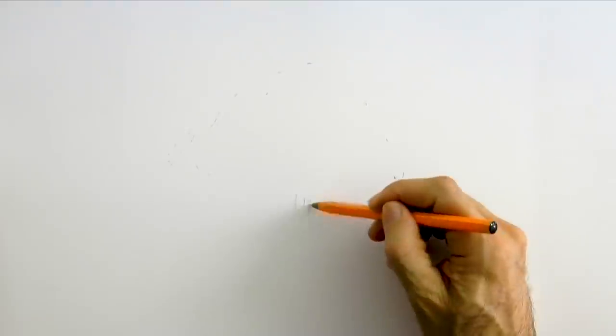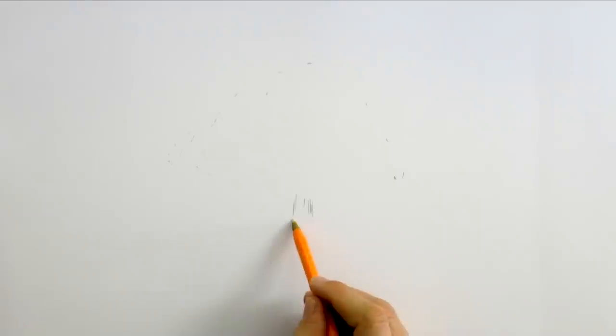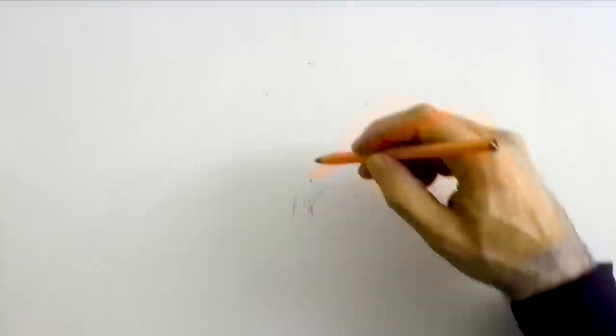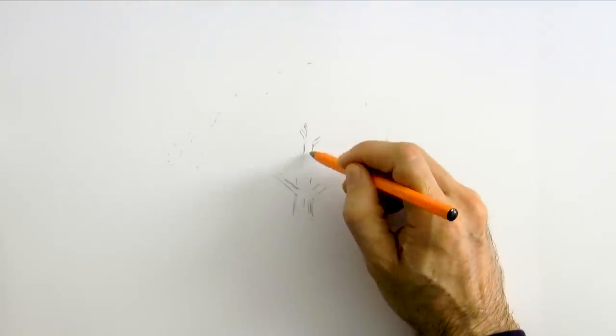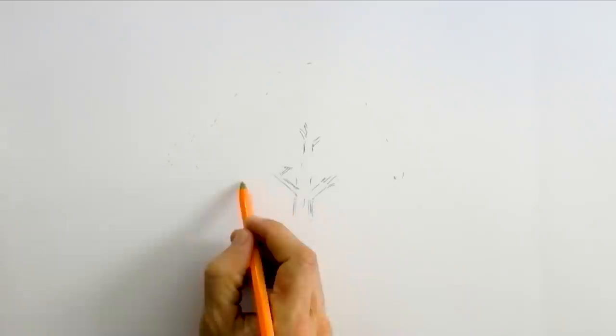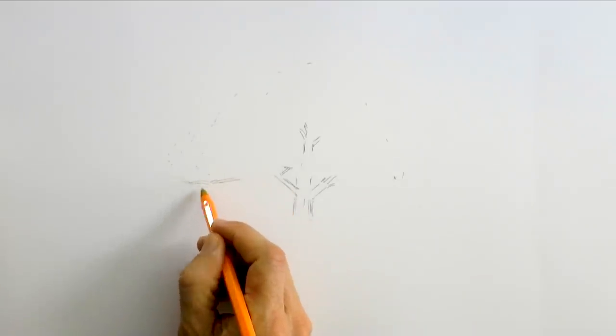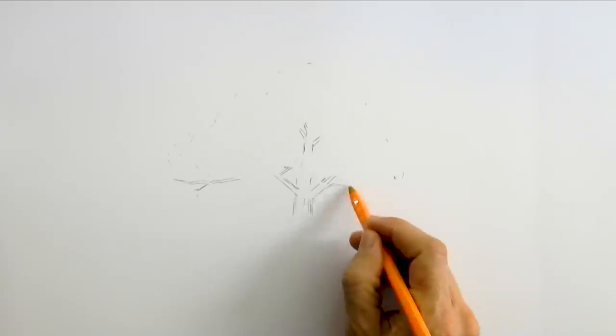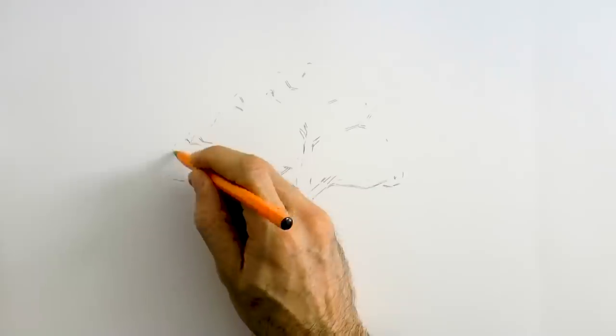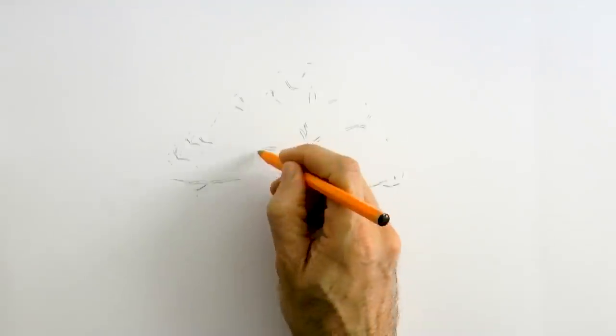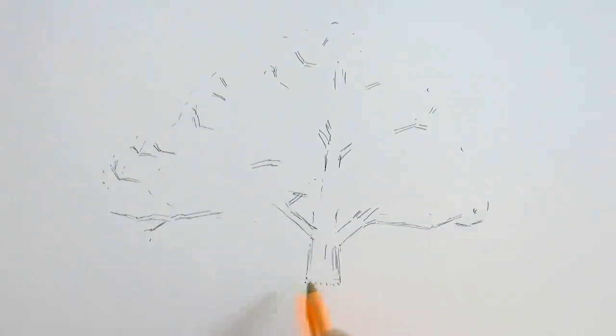Now let's sketch the trunk, like so, and some branches. The branches will go up the tree of course, but I don't make them continuously because I want some leaves to be on top of them, on top of some sections of them. And as we cannot erase, I'll better leave them blank for now.